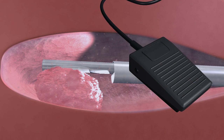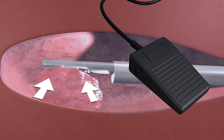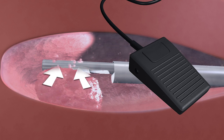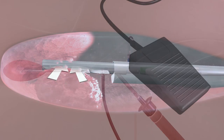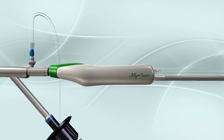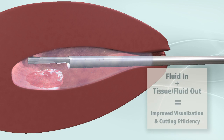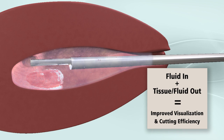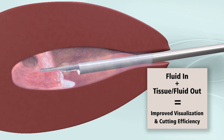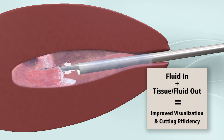When the Myosure foot pedal is activated, the cutting window is opened and suction pulls fluid and tissue from the uterine cavity through the Myosure device and into the tissue trap. To maintain distention while suction is activated, infusion of fluid into the uterus must be at a fluid flow rate and pressure to establish a balance between the two.